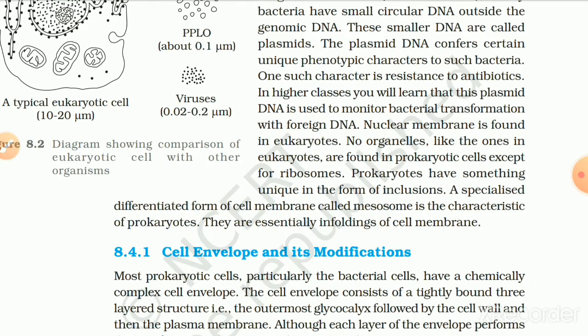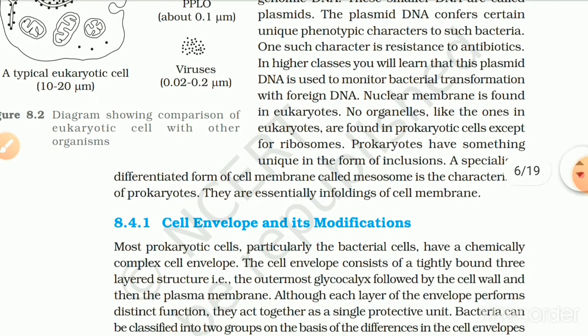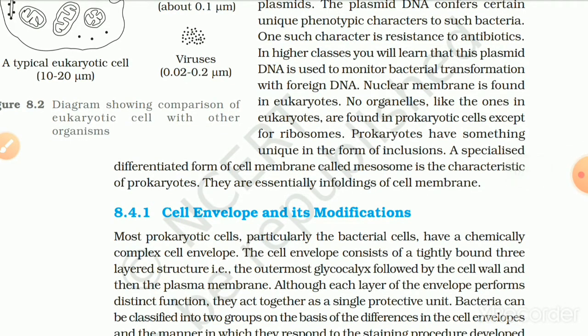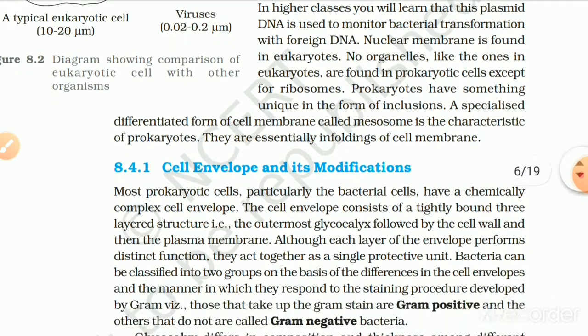Nuclear membrane is found only in eukaryotes. No organelles like those in eukaryotes are found in prokaryotic cells, except for ribosomes. Prokaryotes have something unique in the form of inclusions. A specialized differentiated form of the cell membrane called the mesosome is characteristic of prokaryotes; they are essentially in-foldings of the cell membrane.